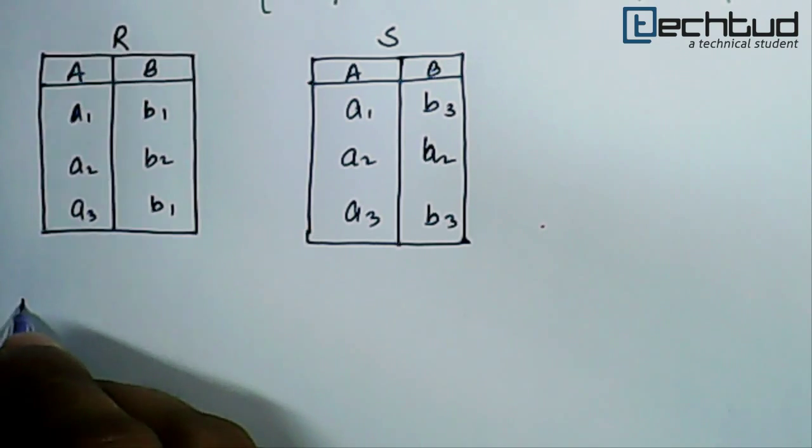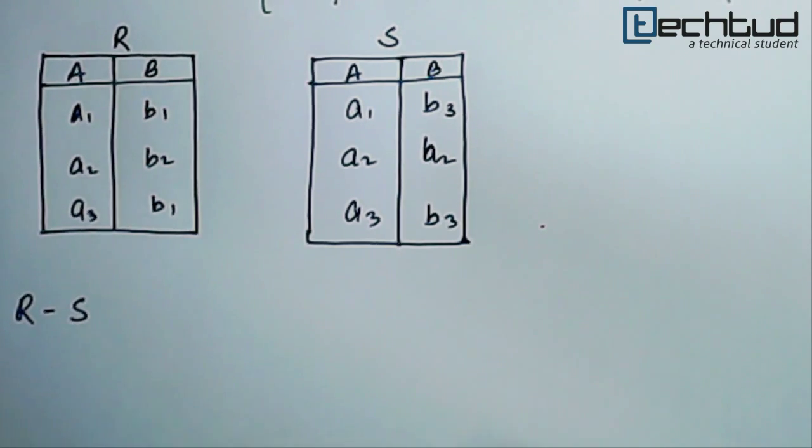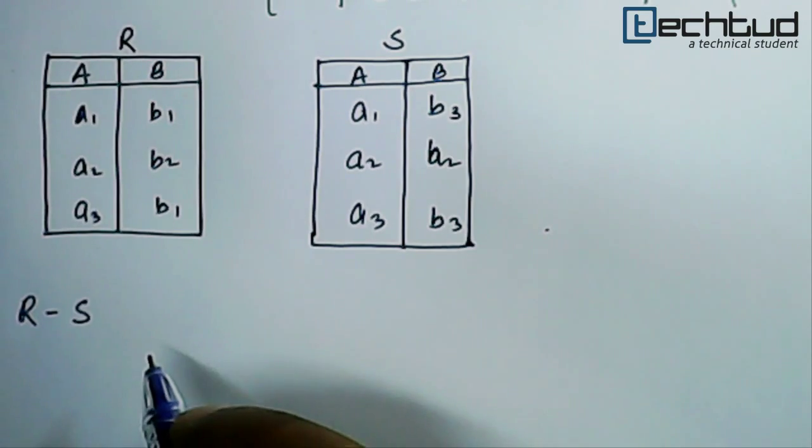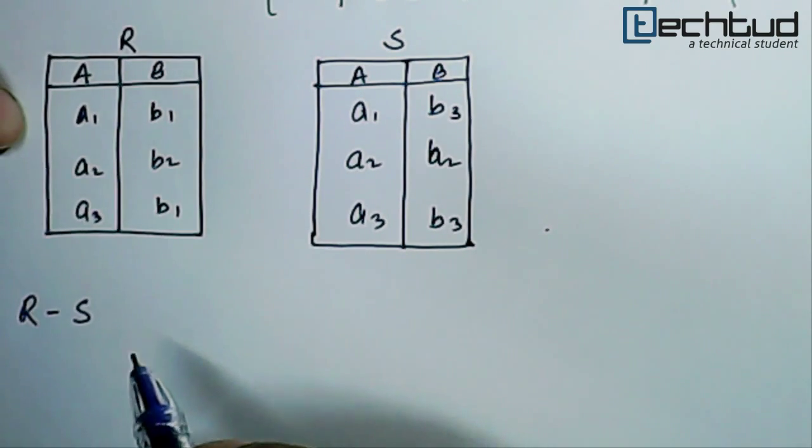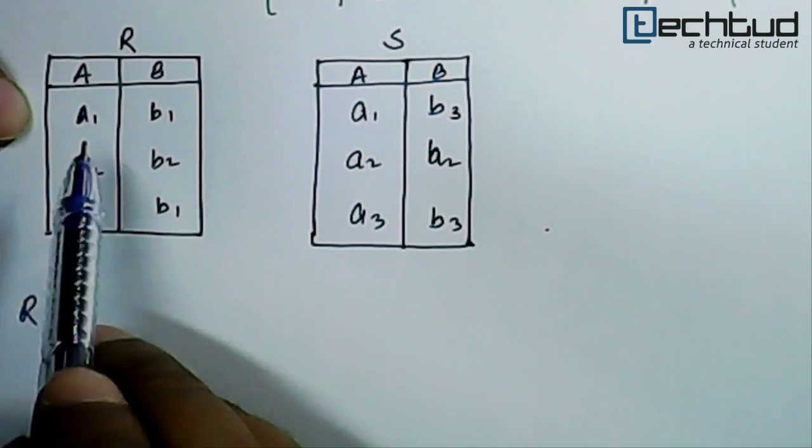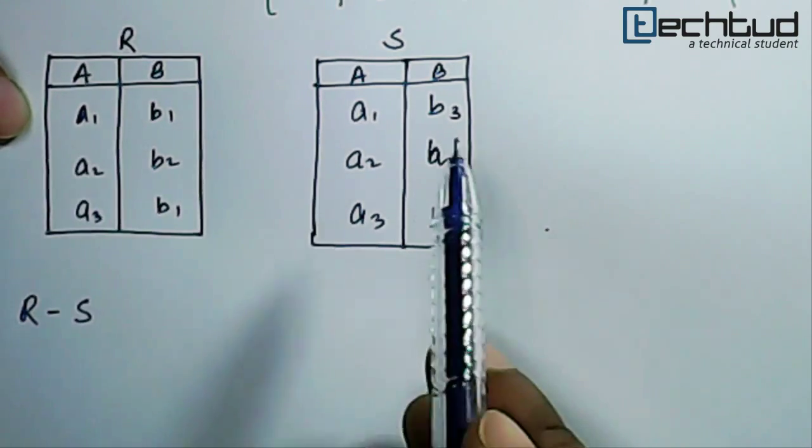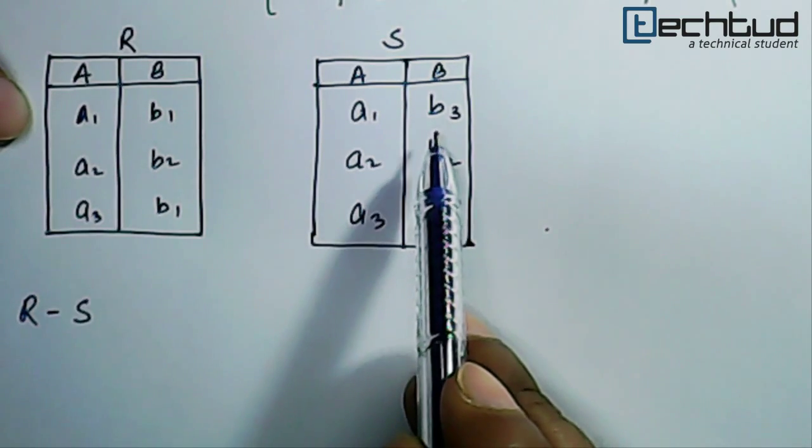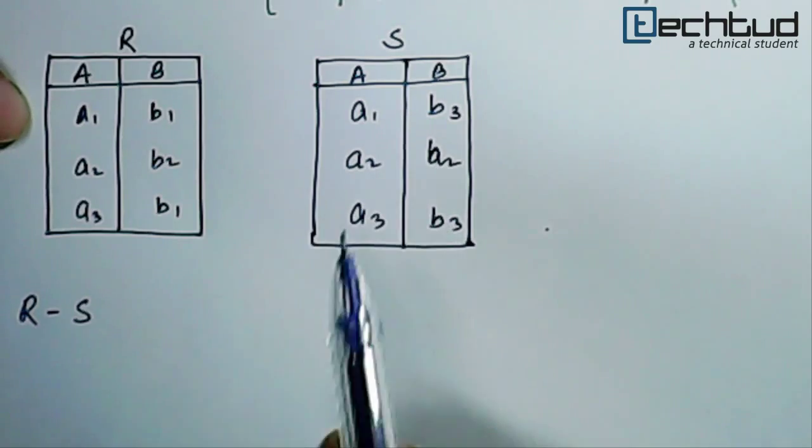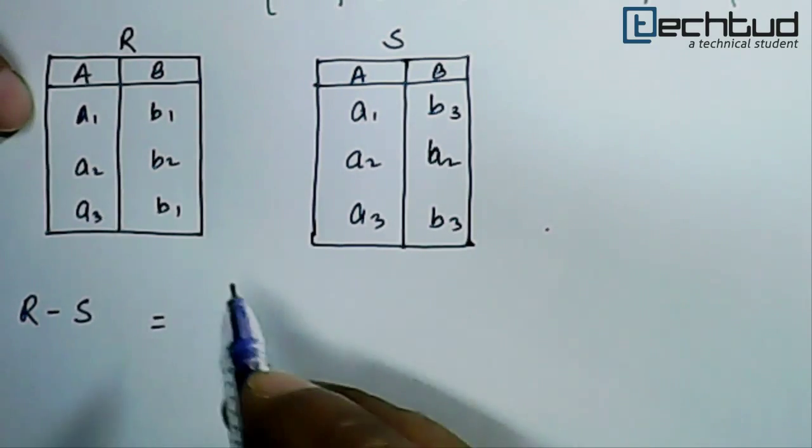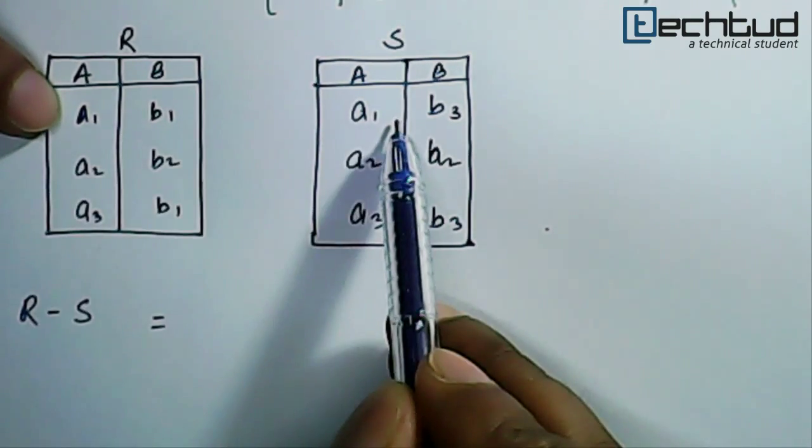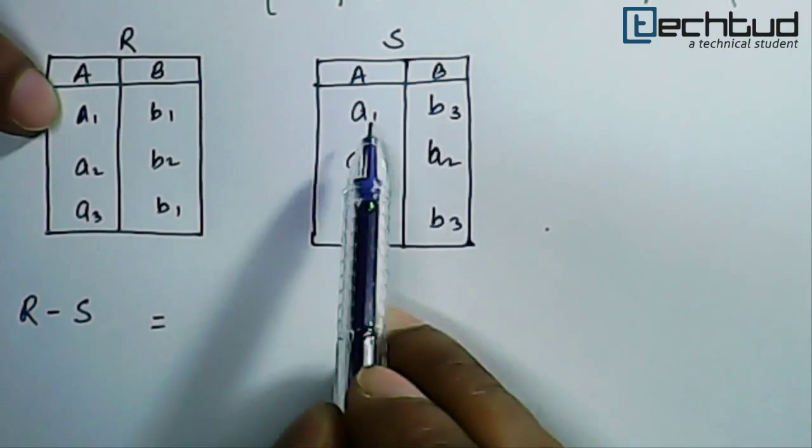We have to find out R minus S, then what we will do? We will just find out a row which is present in this R but not present in S. It will be equal to let us say this is A1 B1, this is A1 B3. A1 B1 combination is not here.